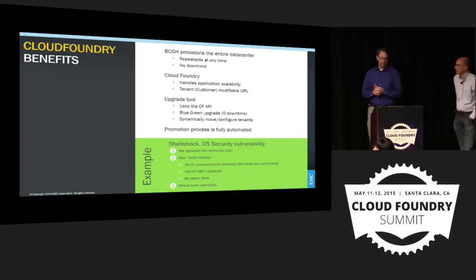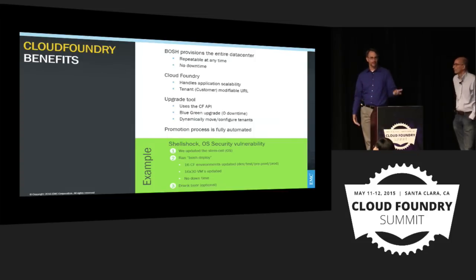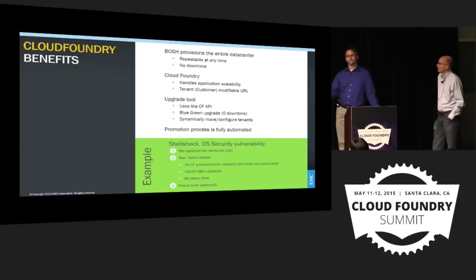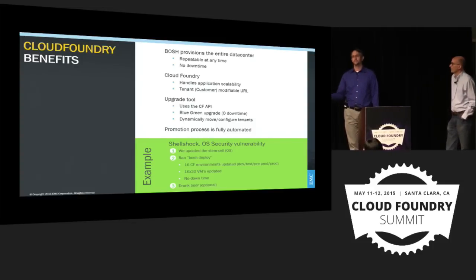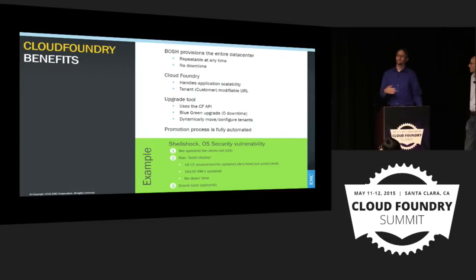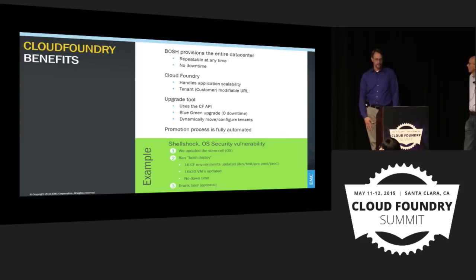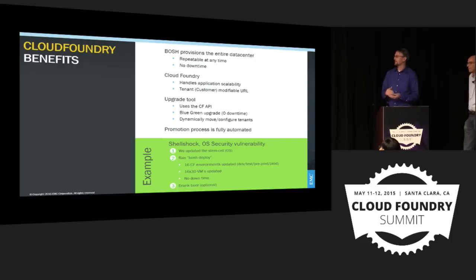Relying on BOSH really hit home during the Shellshock security event last year. The OS was compromised and needed upgrading. For us there was no worry — our plan was: get the new stemcell, run BOSH deploy, done. We waited for Pivotal to patch the stemcell, then over the course of a couple of days, running through all environments with proper testing, we had everything up and running. Upgrade the stemcell, run BOSH deploy, go drink beer. That's almost 500 virtual machines updated automatically.